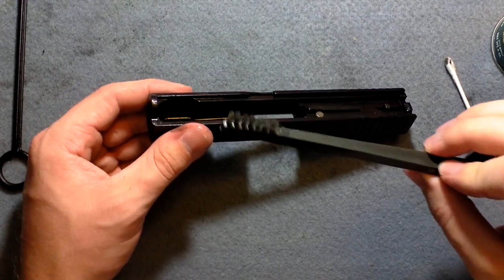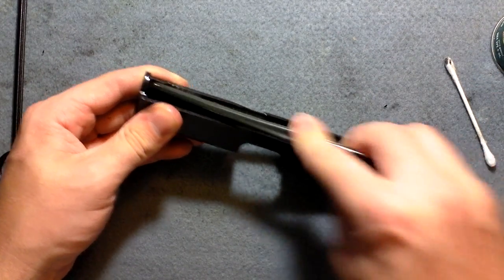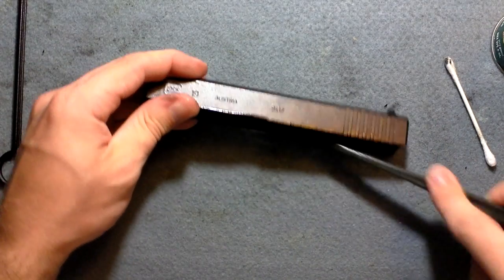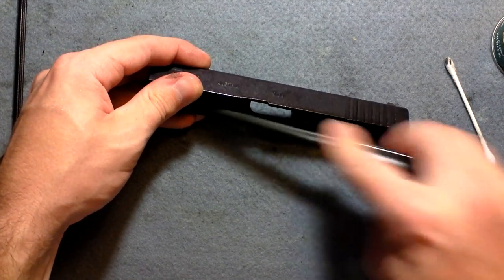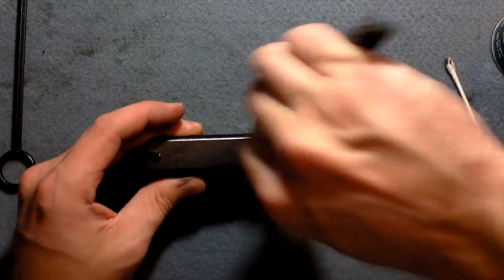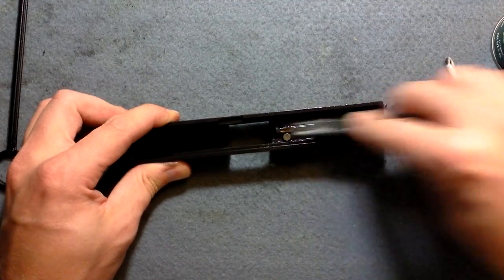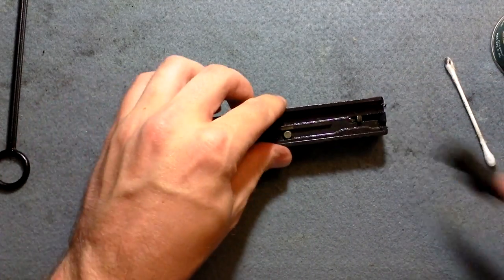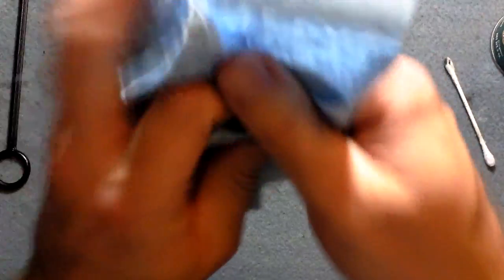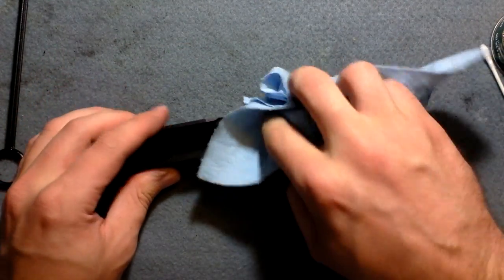You can take the smaller side here and go down the rails. And once you feel confident, you can go ahead and take that blue shop towel and wipe down what you can with it.